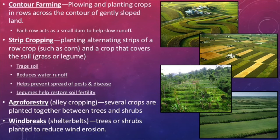An idea close to this, but not used in rows, is called agroforestry. It has the same benefits as strip cropping, but actually sees them dramatically increased — this is much closer to how the organisms would grow naturally. These have all been ways to drastically decrease water erosion, but we also need to consider wind. We can create windbreaks, or rows of taller organisms, to prevent the wind from blowing away any exposed soil.